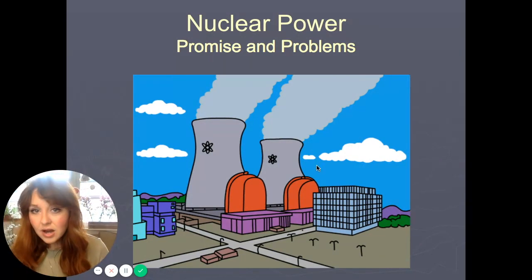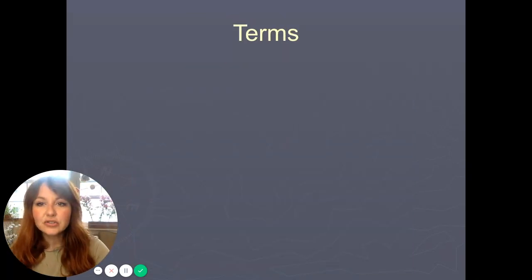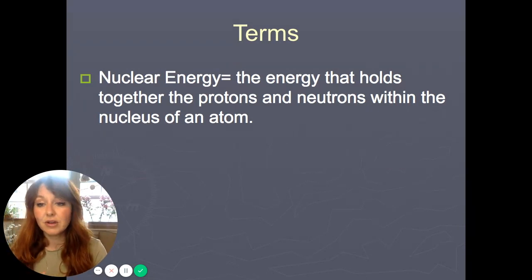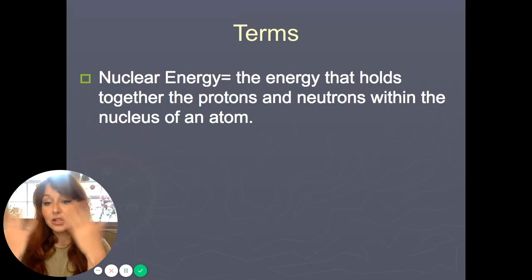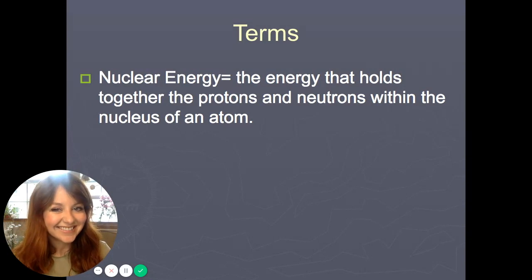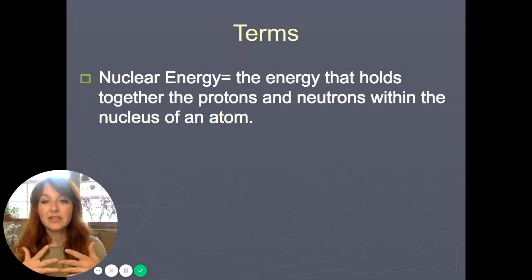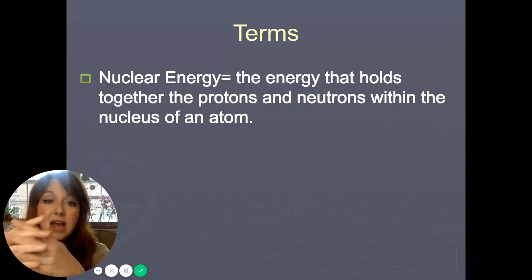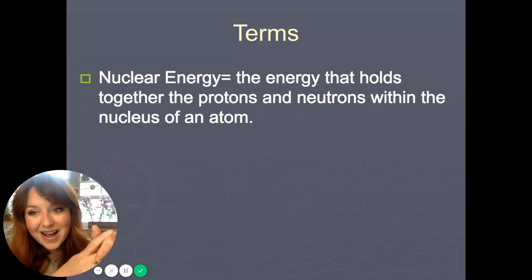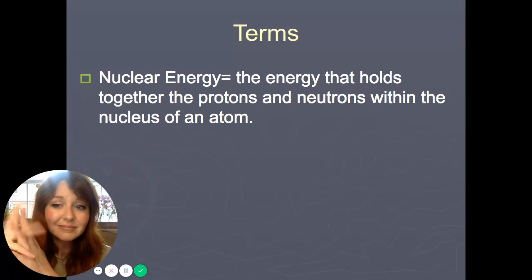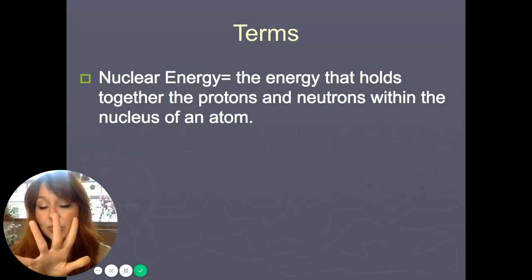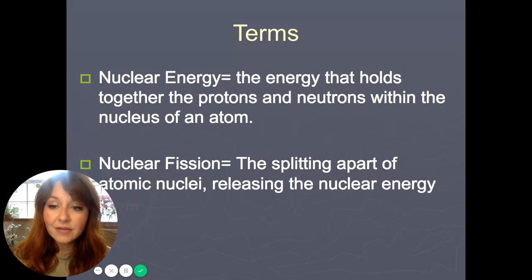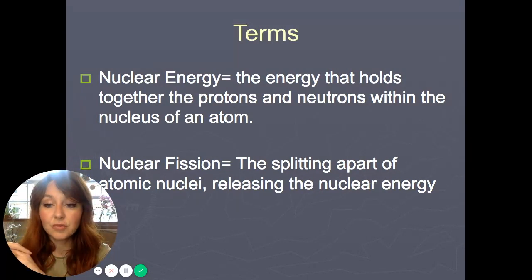So here we go — nuclear power, promise and problems. Nuclear energy should take you back to seventh grade, maybe even the beginning of the year when we talked about trophism and how energy is released in the process of breaking foods down. The energy is stored in the bonds of molecules, and when they break, energy is released. With nuclear energy, energy is held in the protons and neutrons within the nucleus of the atom — a really, really strong bond — which means it can release a tremendous amount of energy. When the nucleus is blown apart, it creates nuclear fission, which is the splitting of atomic nuclei that releases a tremendous amount of nuclear energy.